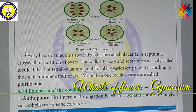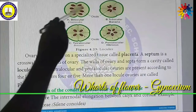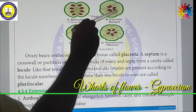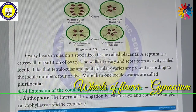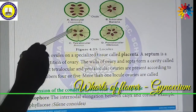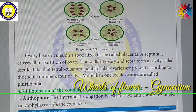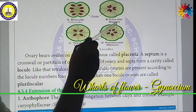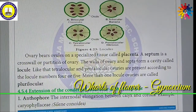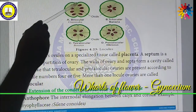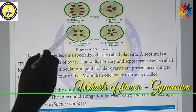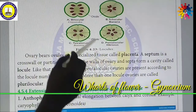Now we are going to see about the number of locules. If a Carpel has two locules or chambers, it is called bilocular. If it has three locules, it is trilocular. If it has four locules, it is tetralocular. If it has five locules, it is pentalocular. Bilocular ovaries are present in Asystasia; trilocular in Banana; tetralocular in Brassica; pentalocular in Hibiscus.